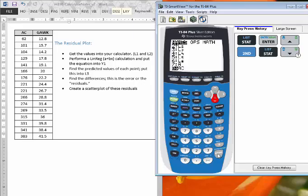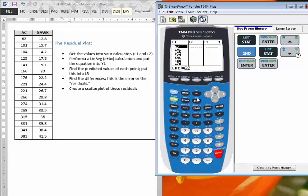So I'll press enter. And now this says L1 is going to be set equal to the list AC, and if I press enter, then those numbers will pop up. We've got 62, 101, 104, 129, etc.